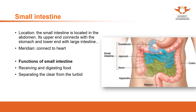The small intestine's functions - receiving and digesting food, and separating the clear and turbid qi - are both under the function of the spleen. When we previously introduced the spleen, we hadn't yet mentioned the small intestine. Now with the small intestine introduced, we can understand that the spleen's function includes the whole digestive function.